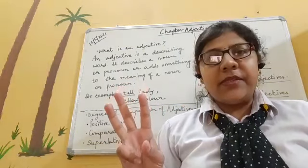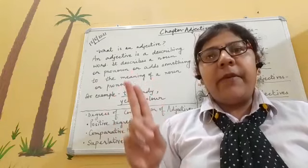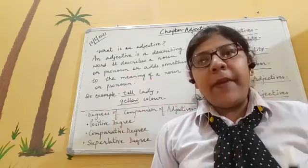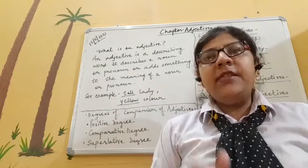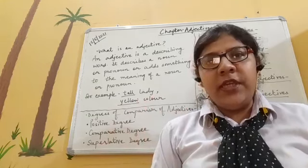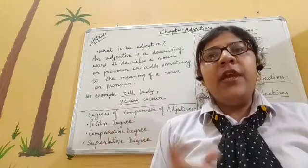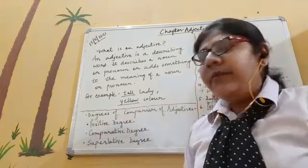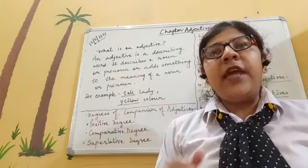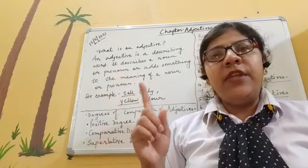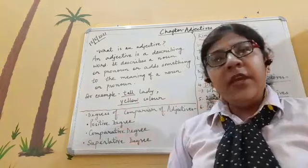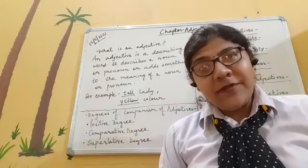Now we will deal with another concept — degrees of comparison of adjectives. There are three degrees: positive degree, comparative degree, and superlative degree. Positive degree means no comparison at all — for example, 'he is a tall boy.' Comparative degree means comparison between two things — for example, 'he is taller than Ram,' where 'taller' is the comparative degree.